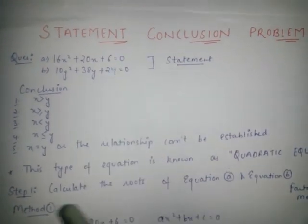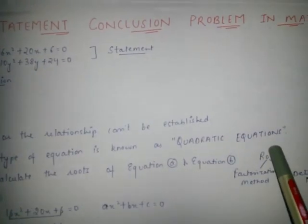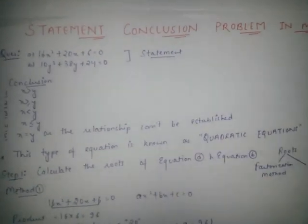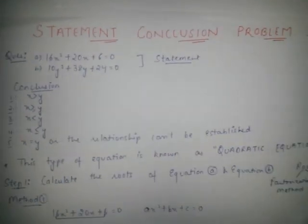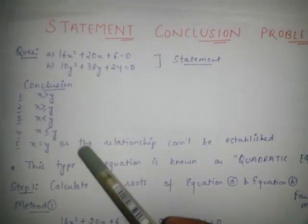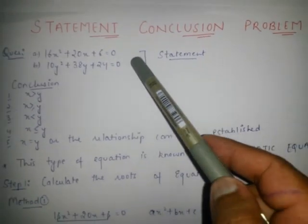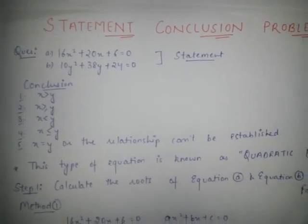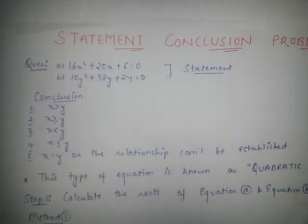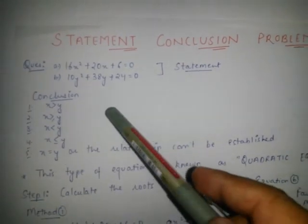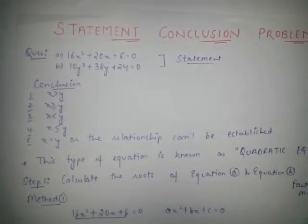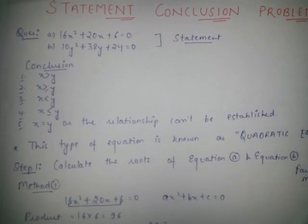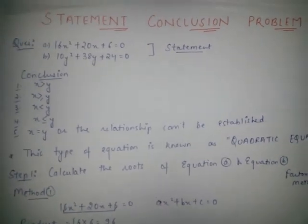These types of equations are known as quadratic equations. For solving these types of questions and getting a conclusion, you must do one thing: solve these two equations and maintain a relation so that you will get a definite conclusion. In this type of question, we have to get only a definite conclusion.